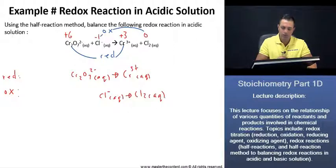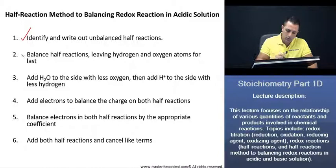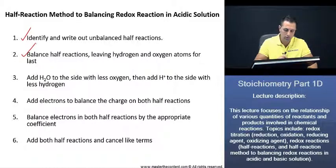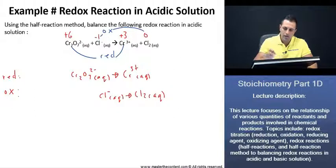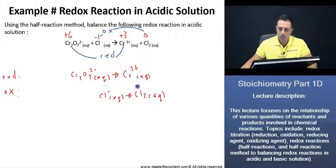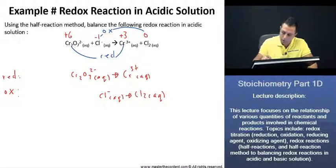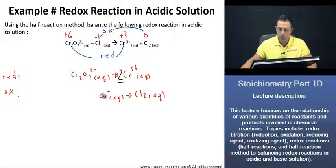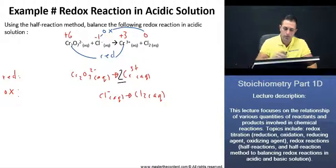Now that we've written our half-reactions, let's look at what we need to do next. We're told to balance the half-reactions, leaving hydrogen and oxygen atoms for last. We have two chromium on the left and only one on the product side of our reduction half-reaction, so we place a coefficient of 2 here to balance chromium. For our oxidation reaction, we also need to balance chlorine, so we place a 2 on the reactant side as well.